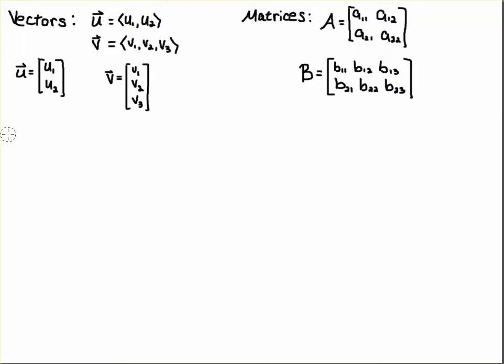The notation for vectors—you can see I have two different types of notation here. Oftentimes in a multivariable calculus setting you might see this first notation with the angle brackets, but in a linear algebra setting you'll see vectors written as column vectors.